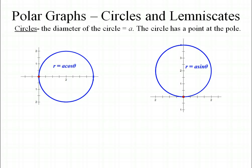Let's start off with the circle. The equation for the circle in polar form is r equals a cosine theta, or r equals a sine theta. The diameter of the circle is given by a, and both circles have a point at the pole.